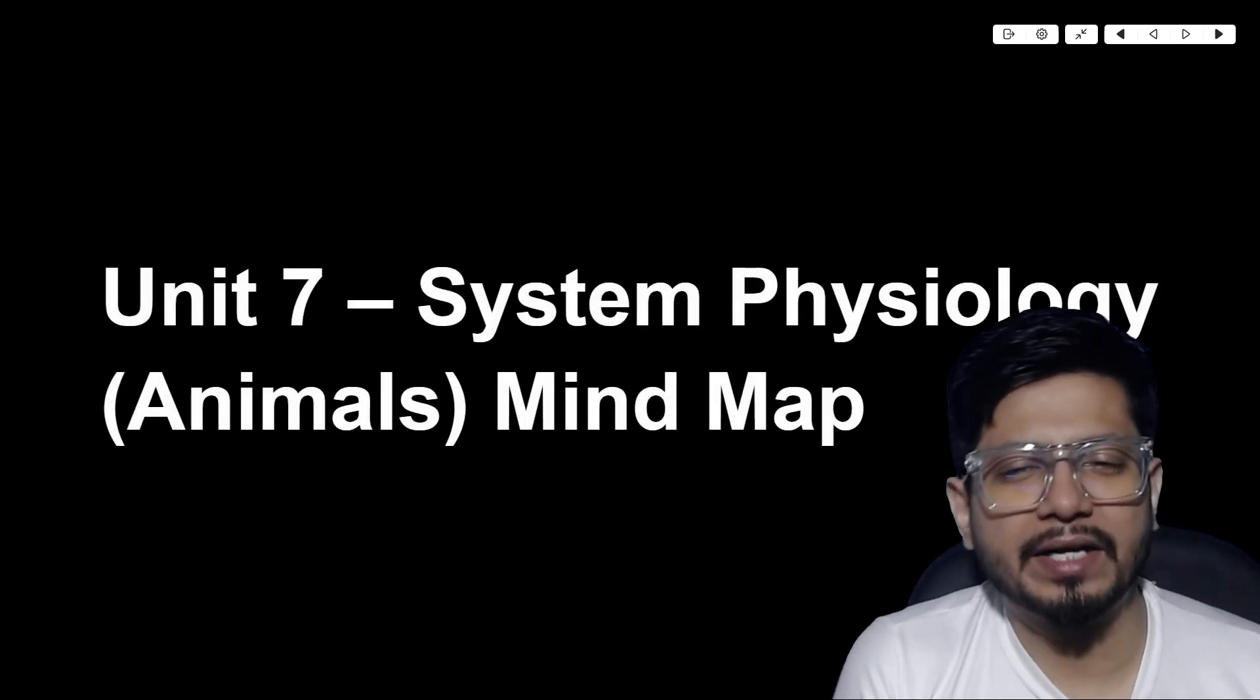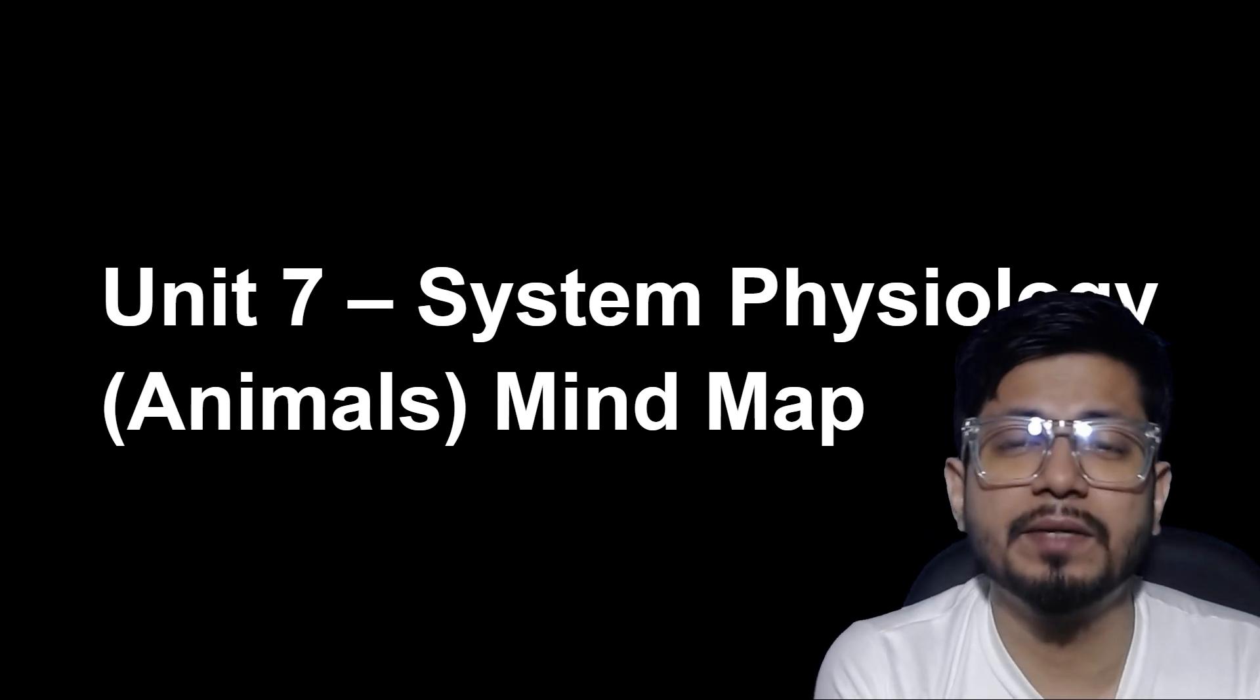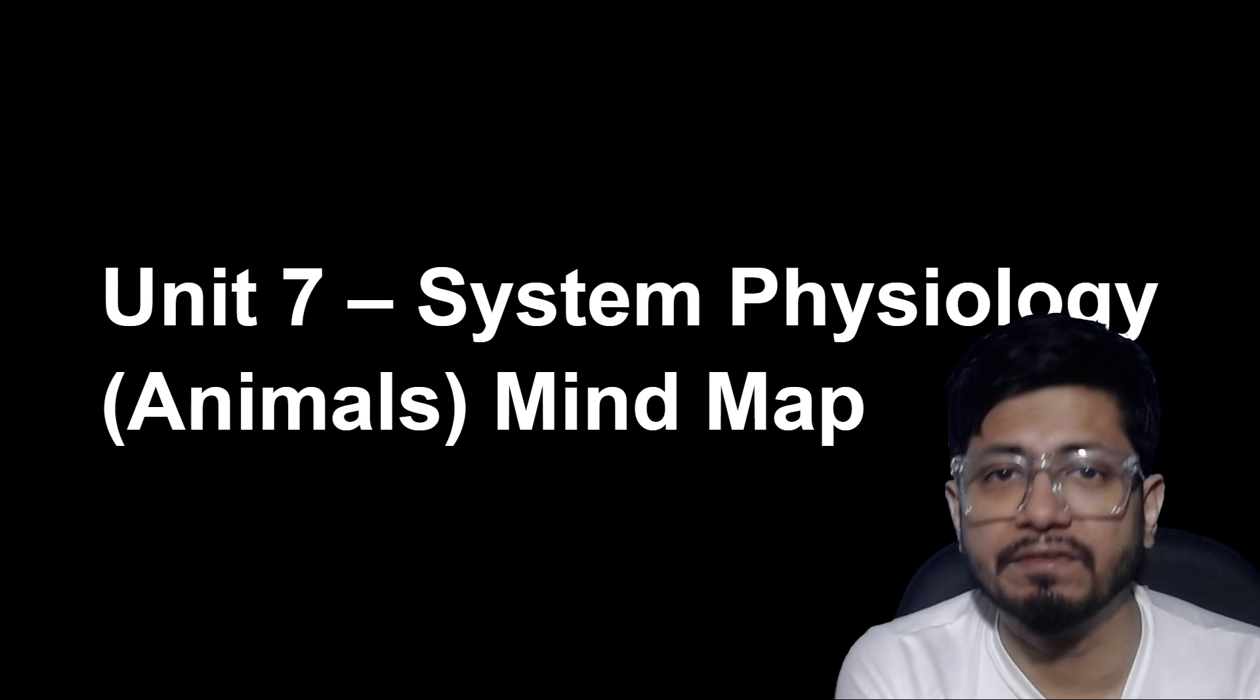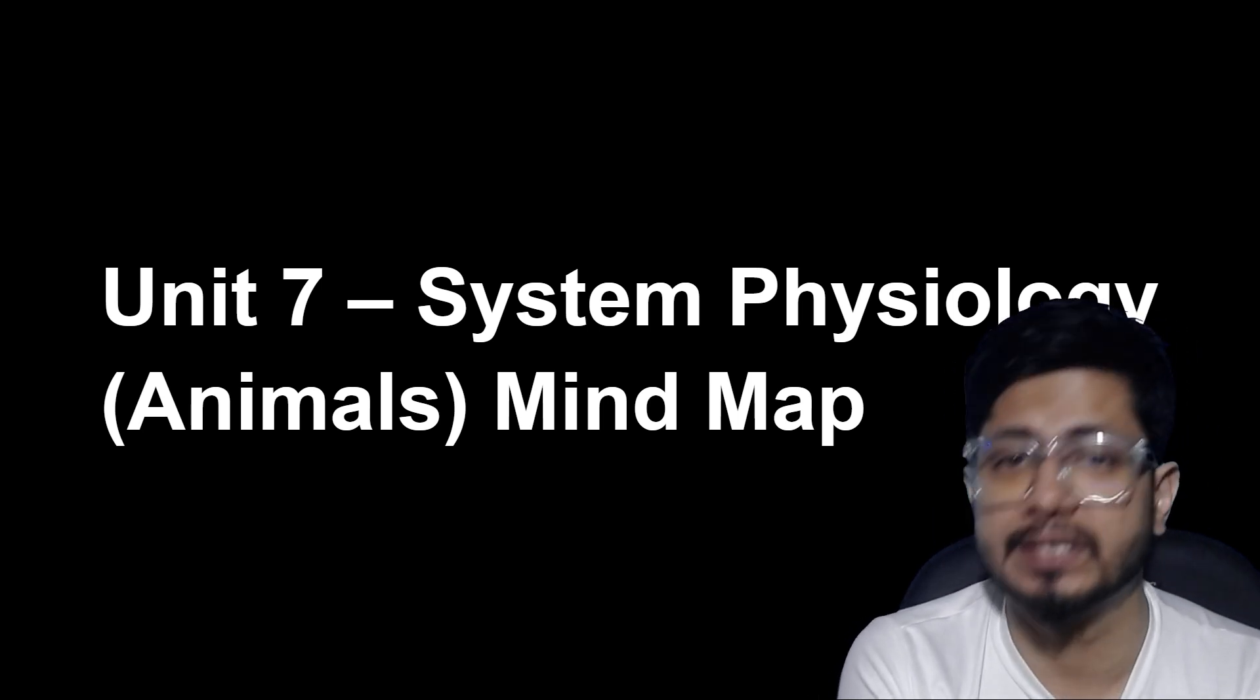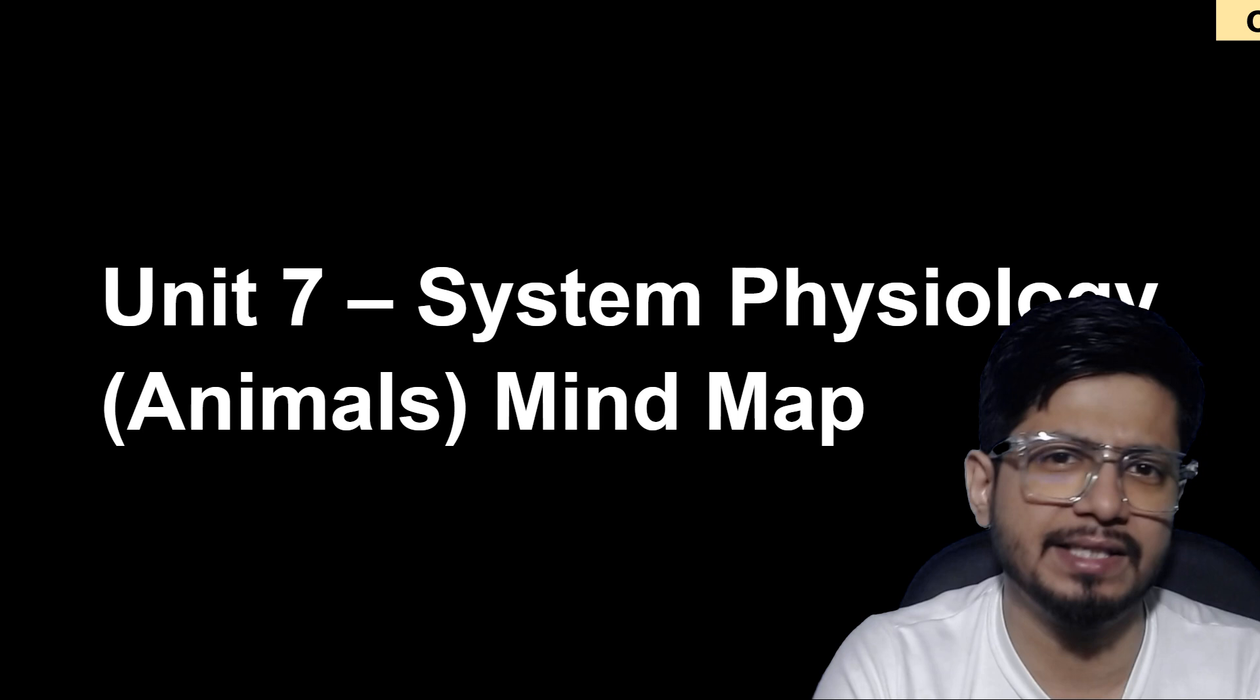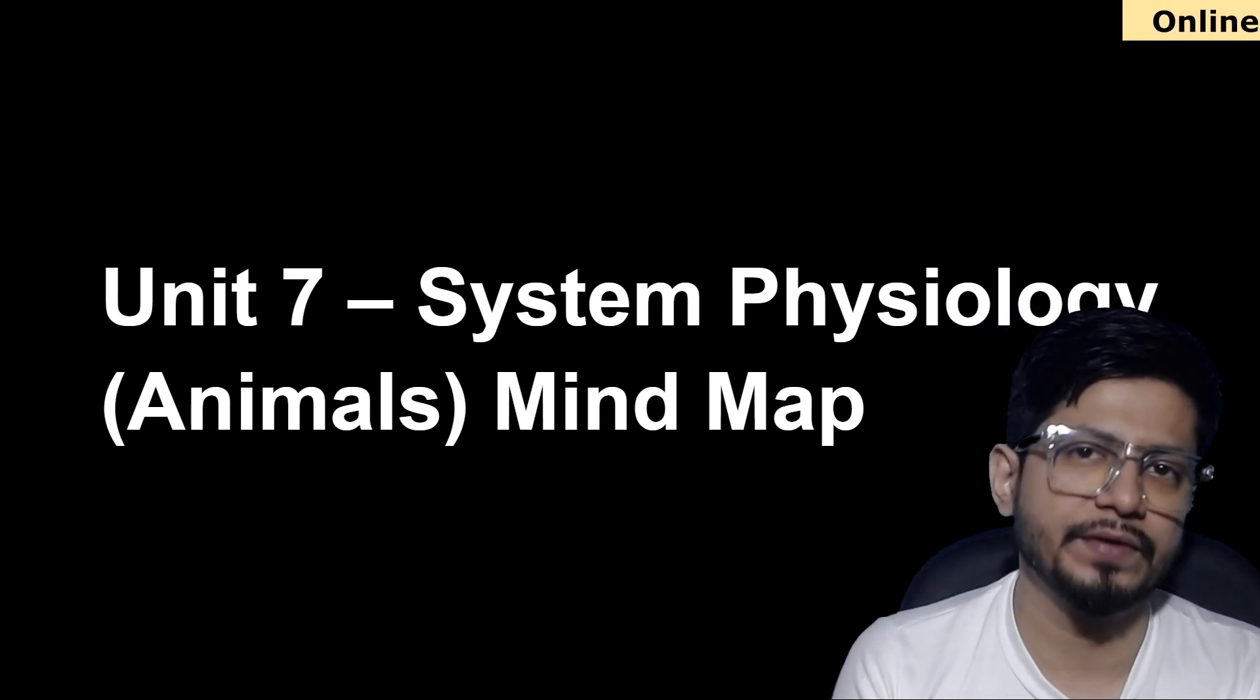Hello everyone, welcome back to another video from Shomus Biology. In this lecture, we are going to talk about systems physiology or animal physiology, which is unit 7. As per the old CSIR NET syllabus, it was unit 7. As per the new LSBT syllabus, it is still unit 7, systems physiology or animal physiology. This is about the heat map analysis of the animal physiology chapter.